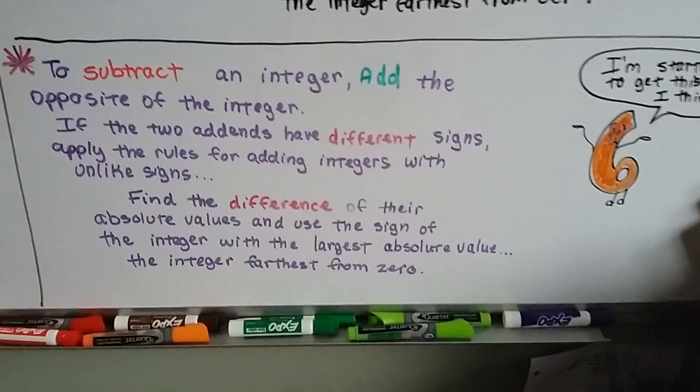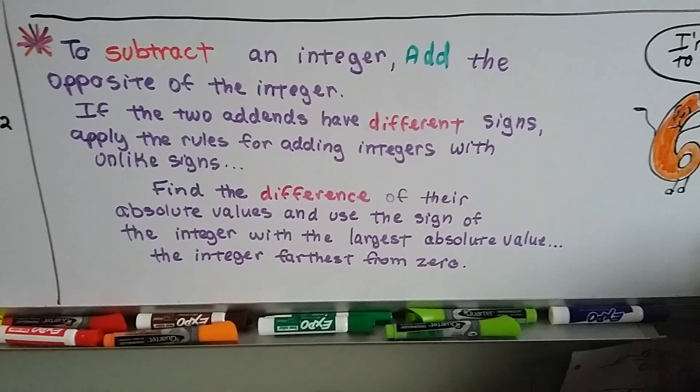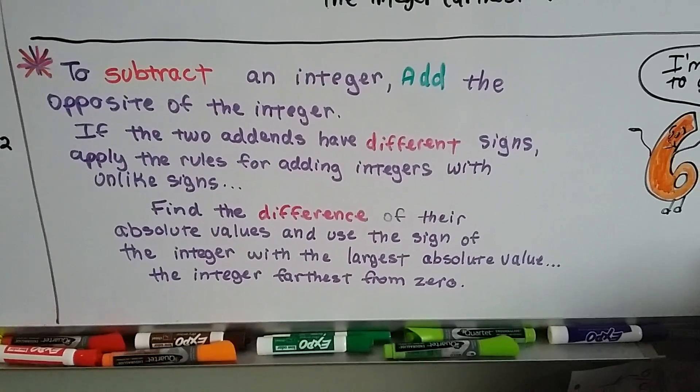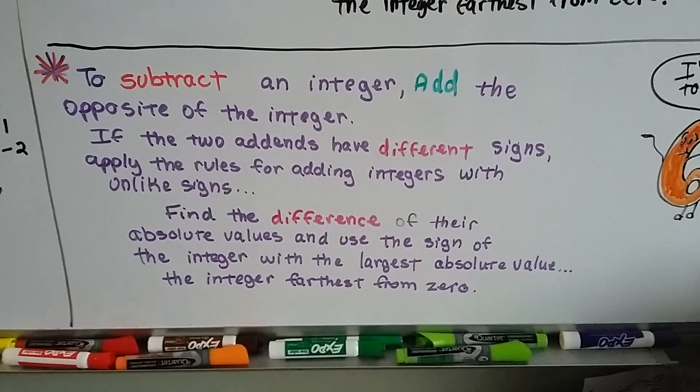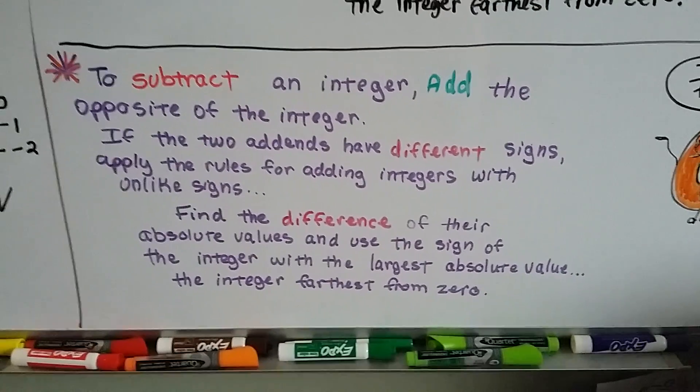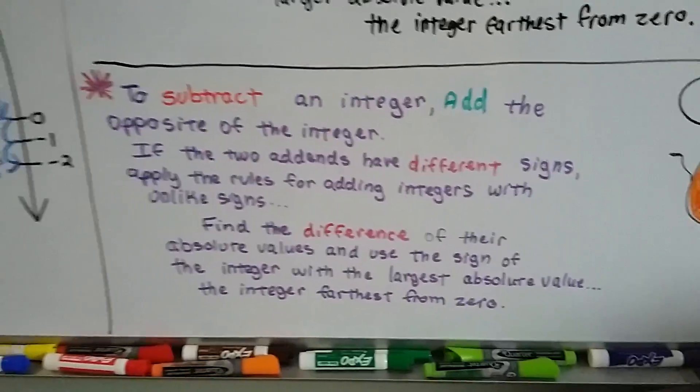Okay? So remember, to subtract an integer, we add the opposite of the integer. And if two addends have different signs, we apply the rules for adding integers with unlike signs, we find the difference of their absolute values and use the sign of the integer with the largest absolute value. You know, the integer that's farthest from zero. That's the sign that we use.